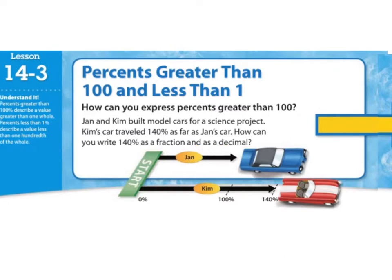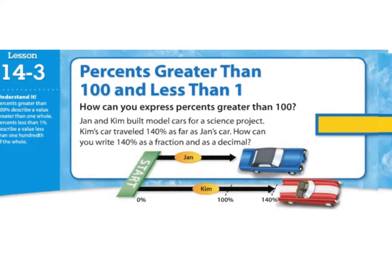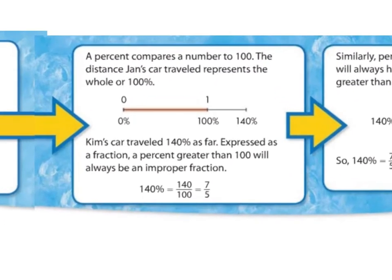Today we're going to talk about how you make percents into fractions, percents into decimals, and between. Remembering that a percent compares a number to 100. Looking down here, I know that 100 is always on the bottom when there's a percent sign. So this is just a picture. Jan's car traveled 100%, but the other car traveled 140%, which I see is farther than that. Kim's car traveled that far. Expressed as a fraction right here, we see that there's a bigger number on top. It's called an improper fraction.